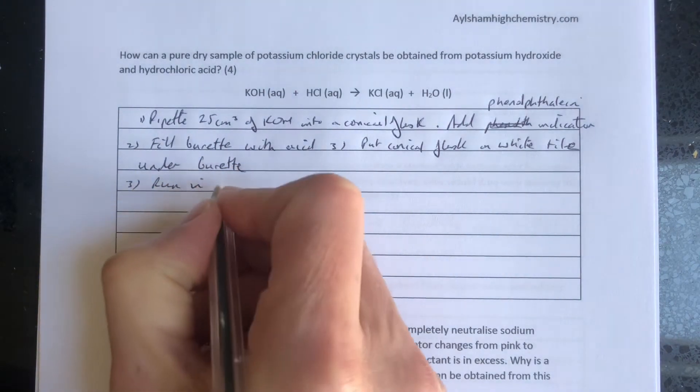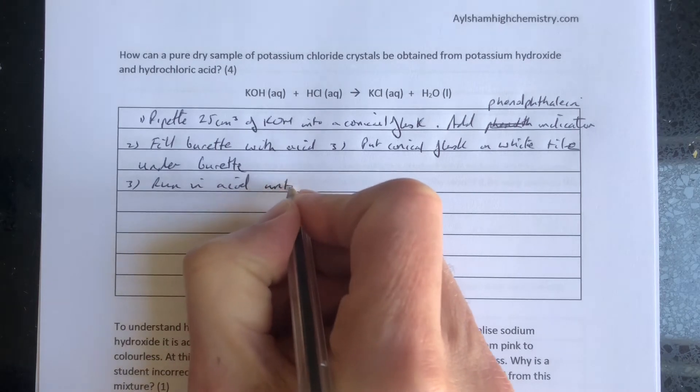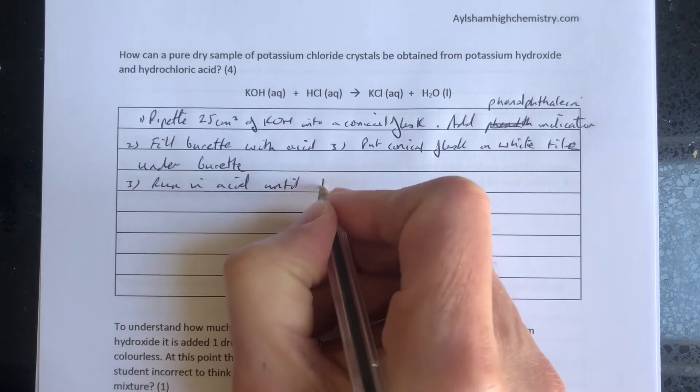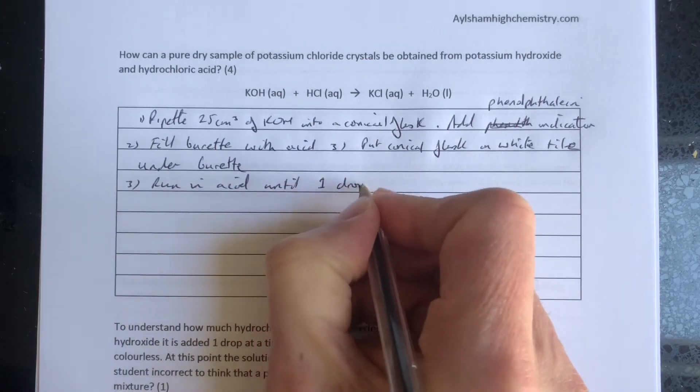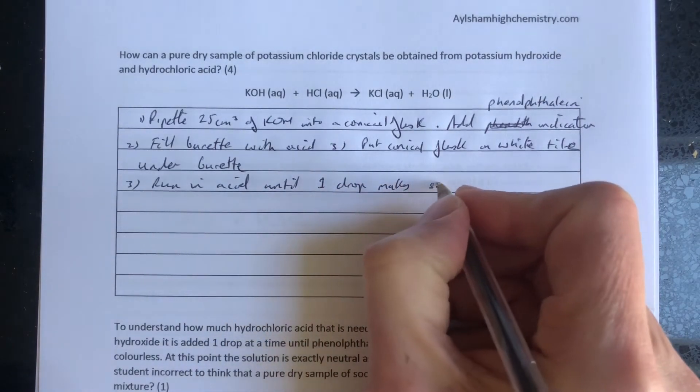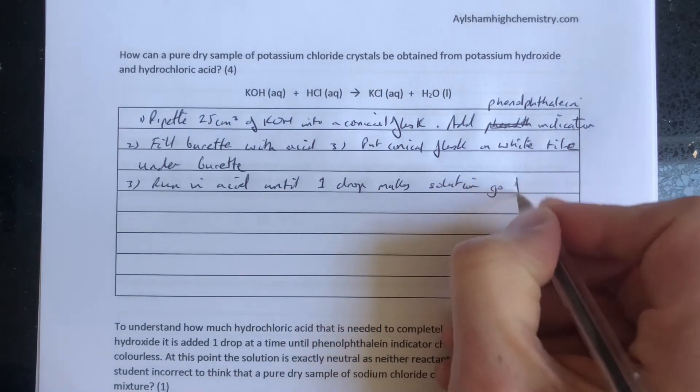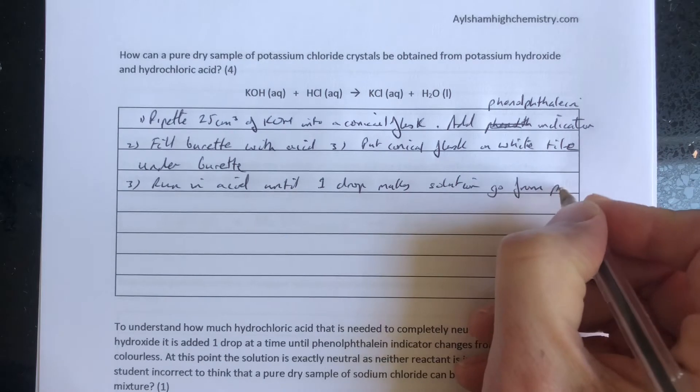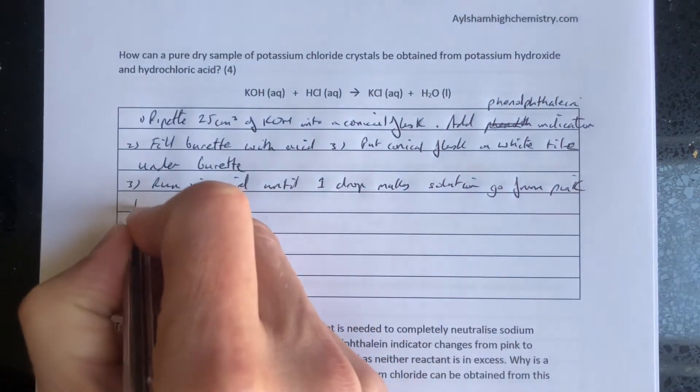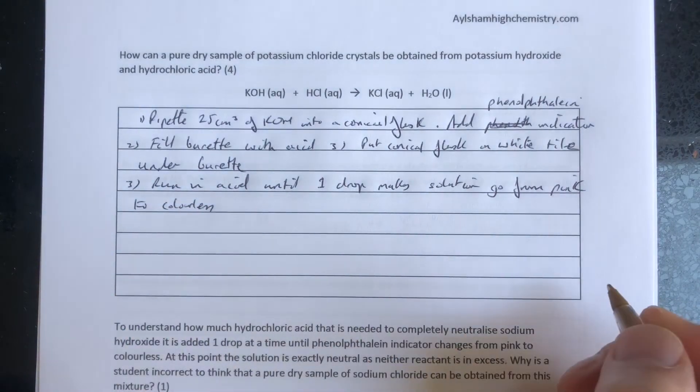Run in acid until one drop makes the solution go from pink to colorless. At that point, we know it's neutral.